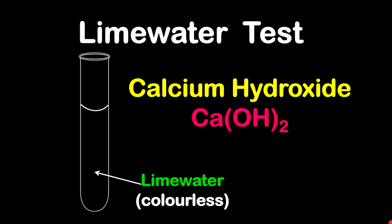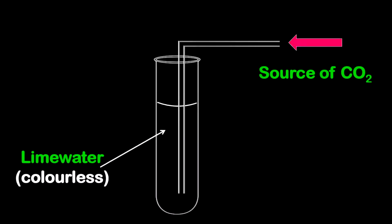Now let's go into the lime water test. I want to make it clear that lime water is not the same as lime juice, so this is not from lime. Lime water is calcium hydroxide with a formula Ca(OH)2. Lime water is a colorless liquid — I will demonstrate in another lesson how to make lime water in a lab or at home. Now what you'll want to do is set up a flask with the lime water and also insert a straw or a tube.